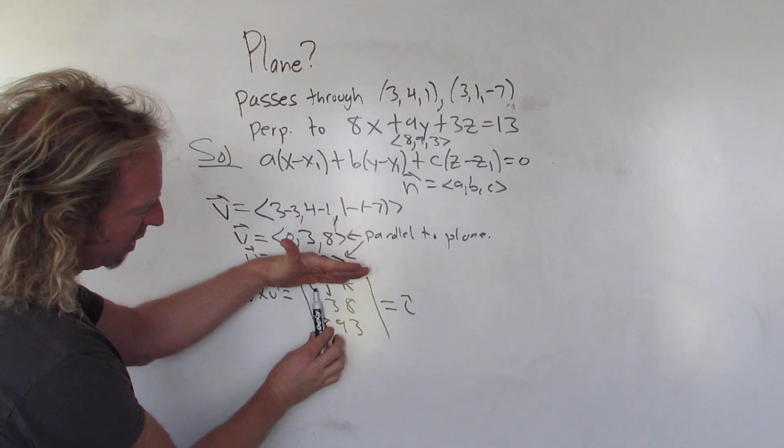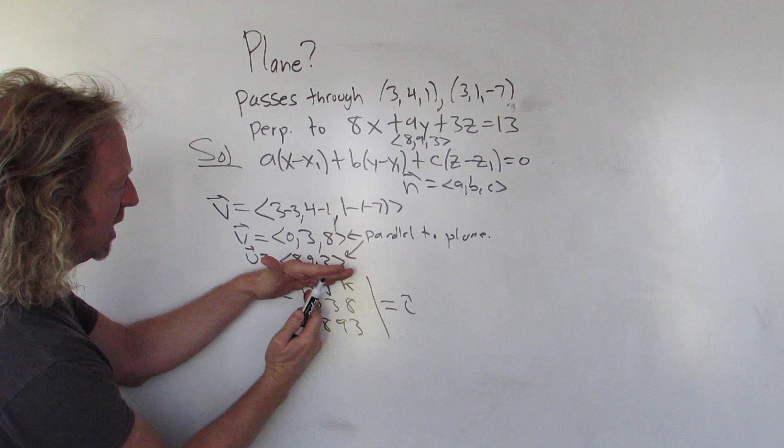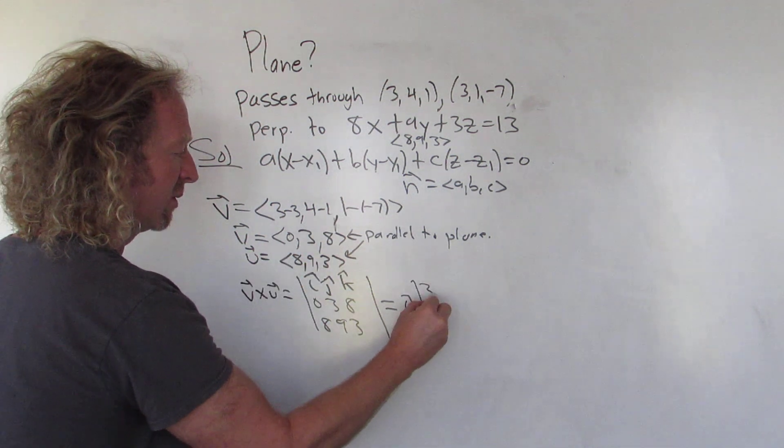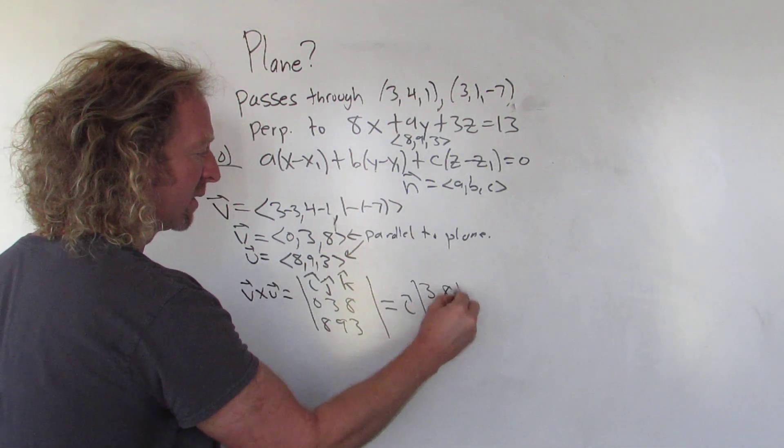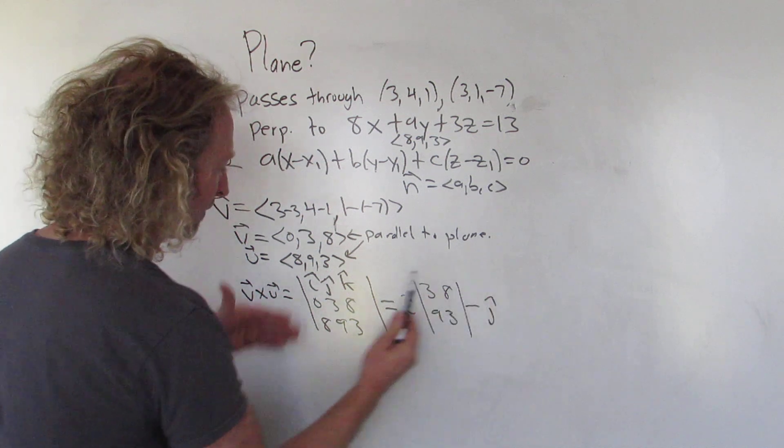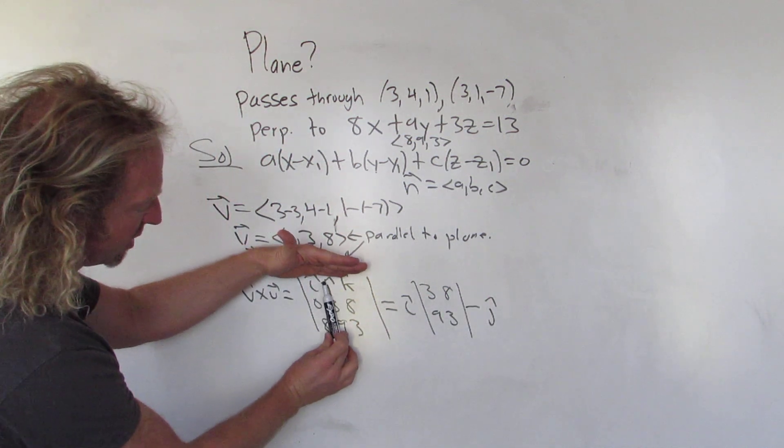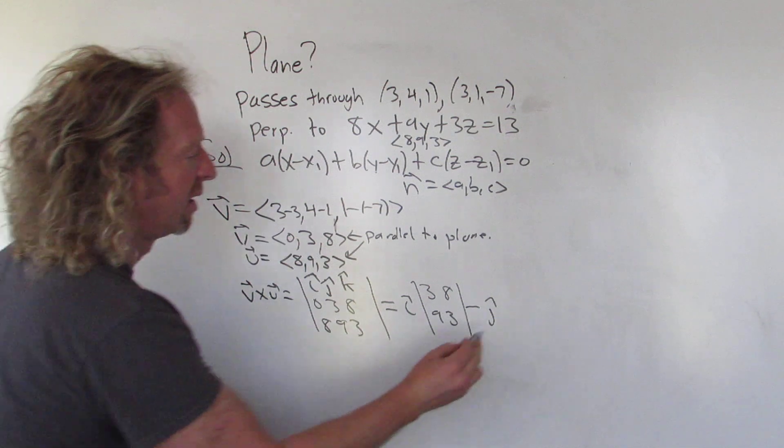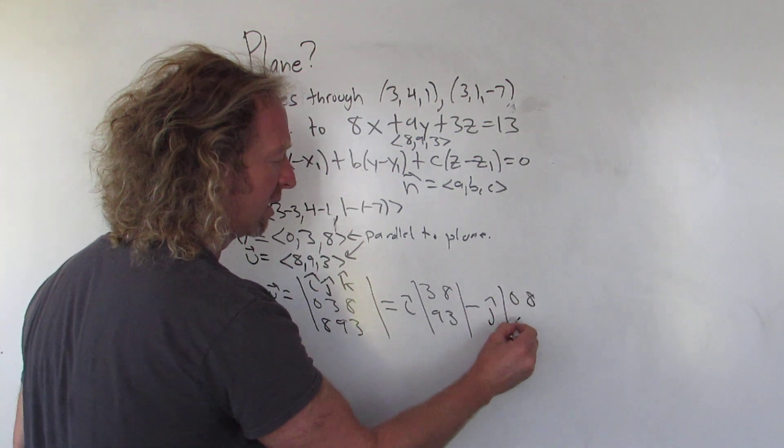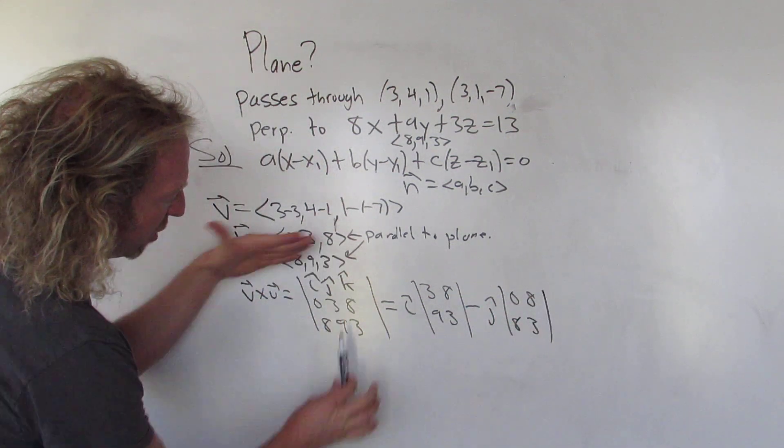Then you cross these out. So 3, 8, 9, 3. So 3, 8, 9, 3. And minus j hat. It's always plus, minus, plus. And you cross these out. So 0, 8, 8, 3. So 0, 8, 8, 3. And you cross the corresponding row and column. And then boom.